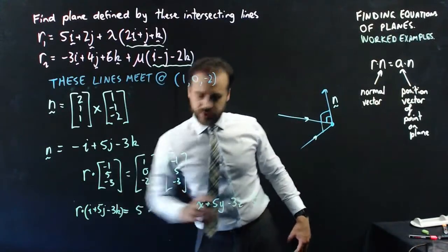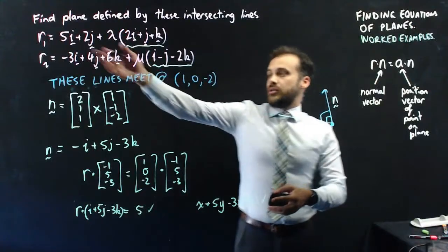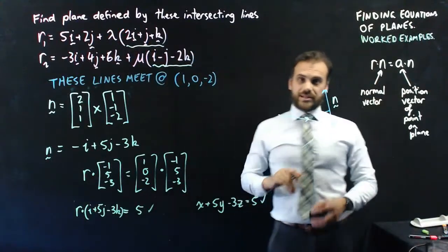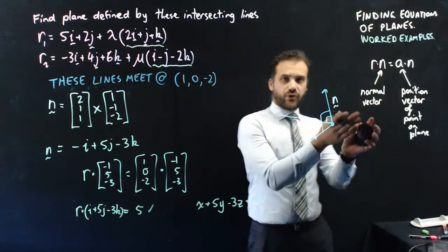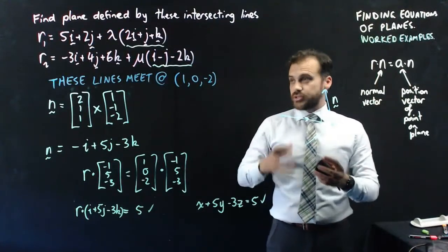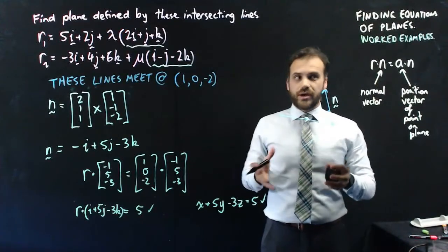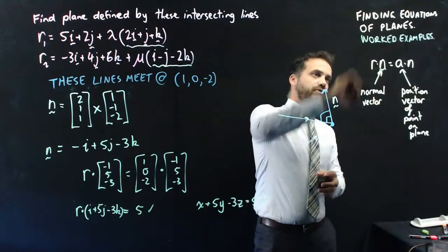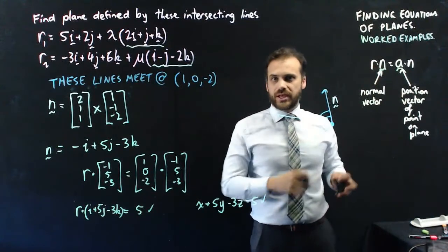You can see we keep coming back to this formula. You need to be able to use your cross product and the skills you've learned before, but really it all comes down to being able to find a normal vector and a position vector, and putting them together.